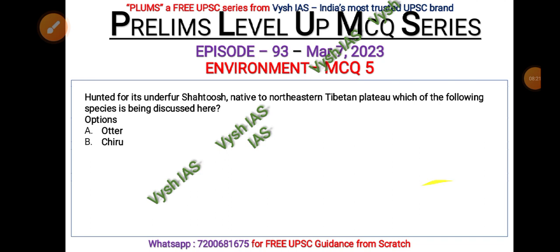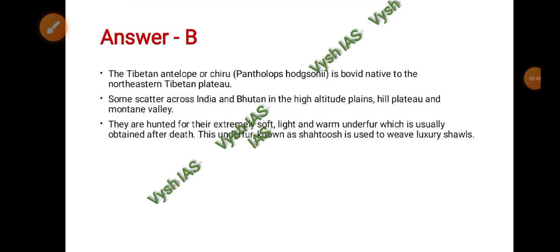The fifth and final MCQ: There is a species that is hunted for its underfur, known as shahtoosh, and it is native to the northeastern Tibetan Plateau. Which species are we talking about? Options are: (A) otter, (B) chiru, (C) oryx, or (D) chinkara, also known as gazelle. Answer the question.